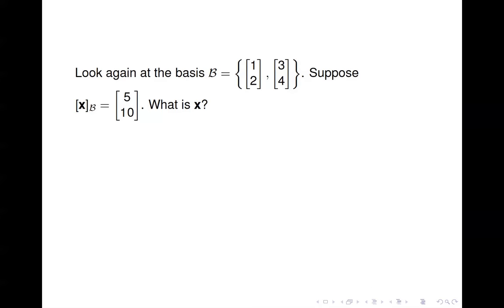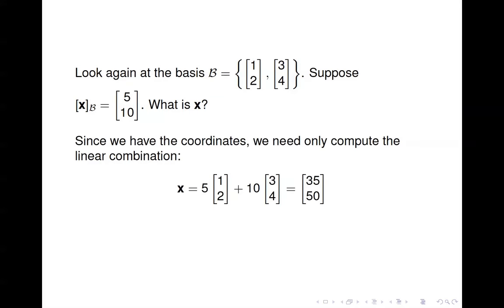Suppose we go the other way: suppose you're given the coordinate vector and you want to find the corresponding vector. In that case, all you need to do is compute the linear combination — you have the coordinates. So in this case it's 5 times the first vector plus 10 times the second, and we compute that to be (35, 50).